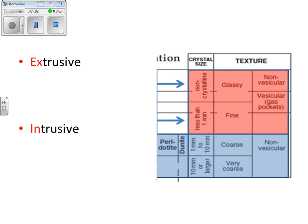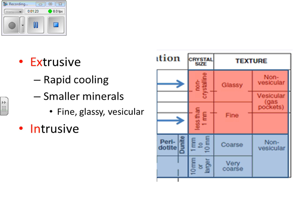In terms of igneous rocks, they have two categories: extrusive and intrusive. With extrusive, 'EX' refers to exit — something that's outside, something that's at the surface. These igneous rocks tend to cool rapidly, and because they cool rapidly, they have smaller minerals. Being that they have smaller minerals, when you look at the texture, they're either going to be fine, glassy, or vesicular. If it's fine, that means you can't see the individual minerals without the help of a microscope.